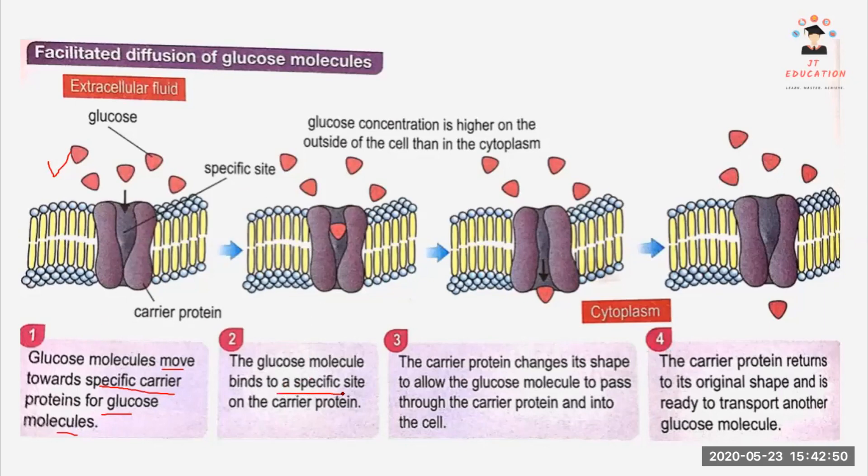Glucose will bind to a specific site of the carrier protein. It will bind first and then carrier protein will change the shape. Just now the shape was like a V shape, now it's like an inverse V shape. Then it will allow the glucose molecule to pass through the carrier protein and into the cell. No energy involved, it's a passive transport. This process is called facilitated diffusion. Then carrier protein will return to its original shape and ready to transport another glucose molecule.